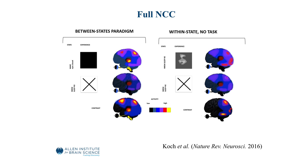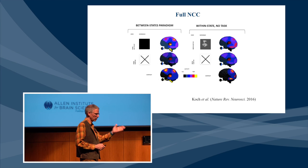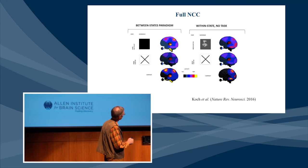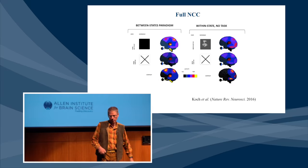You contrast that with the same subject later when asleep in the scanner, say in deep sleep stage four, and you do a contrast. The best, cleanest paradigm here is what's called a within-state no-task paradigm, where you have subjects who are asleep, wake them up at some random point in time, and ask what went through your mind 20 seconds before. You can then correlate the physiological correlates of that state using EEG or fMRI. Again, what you see primarily are so-called hot spots in the back of the brain.